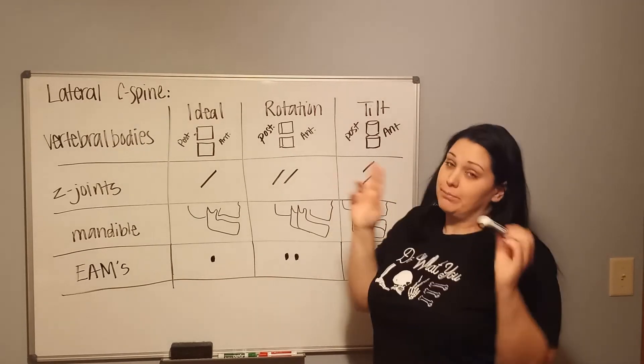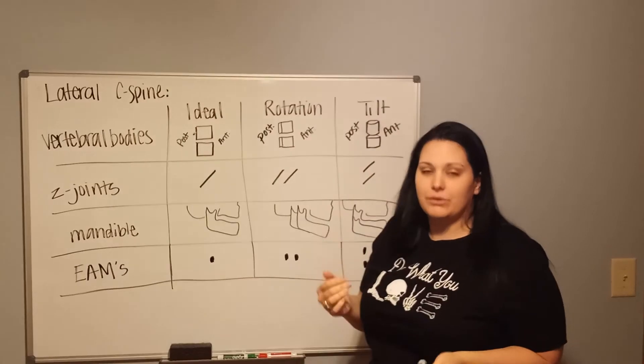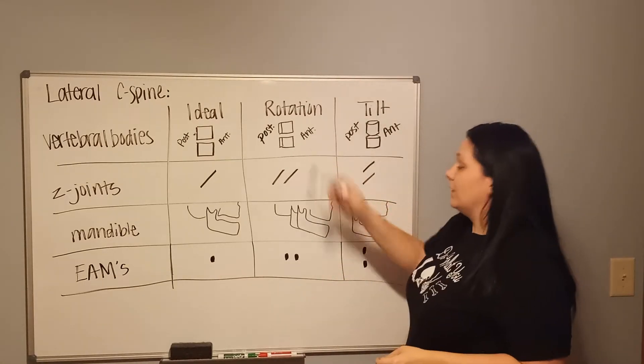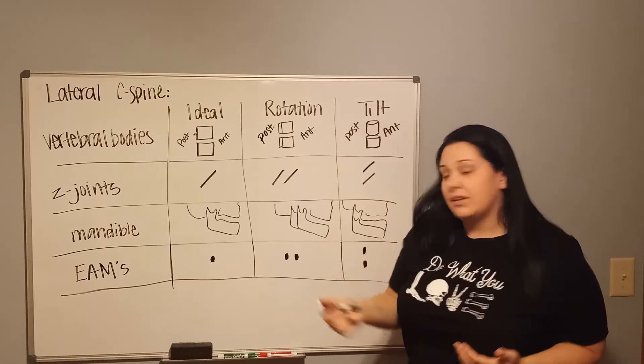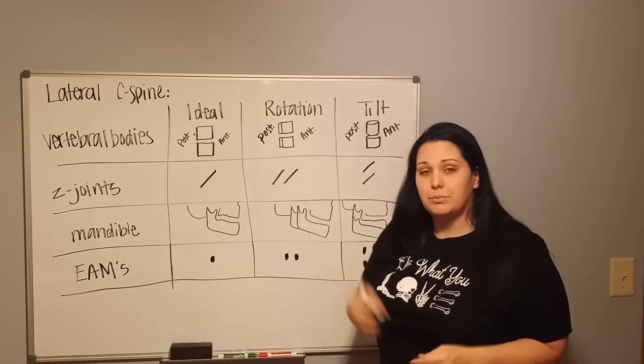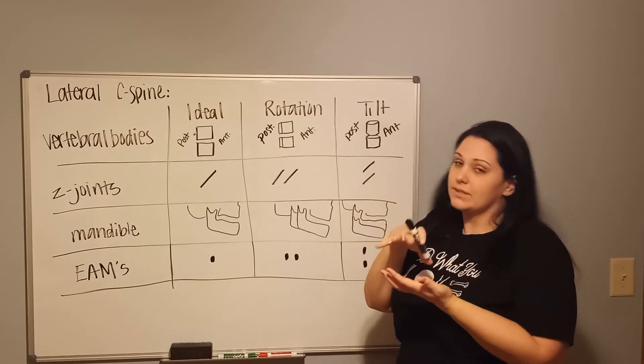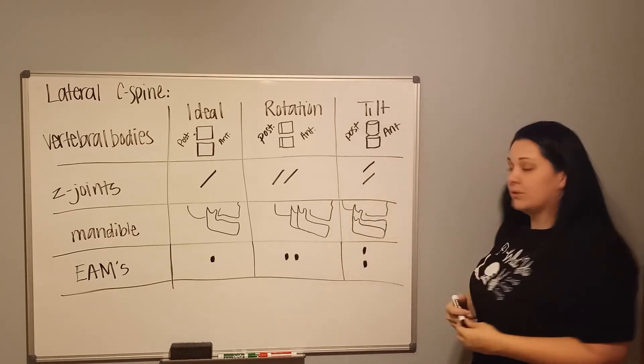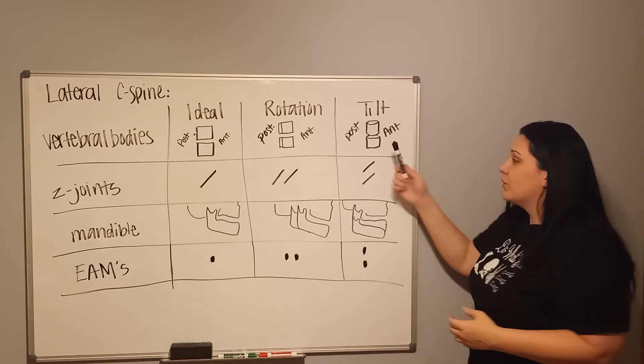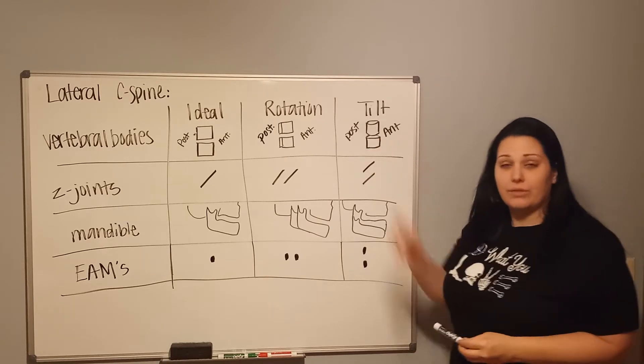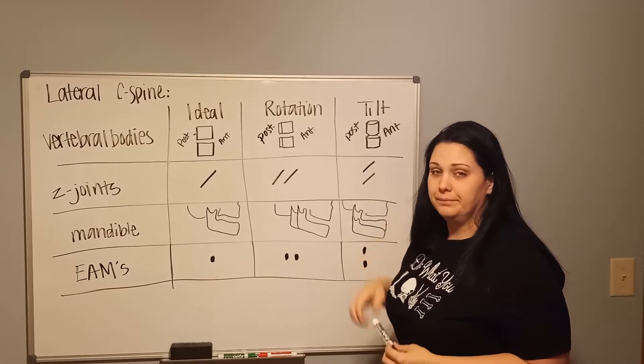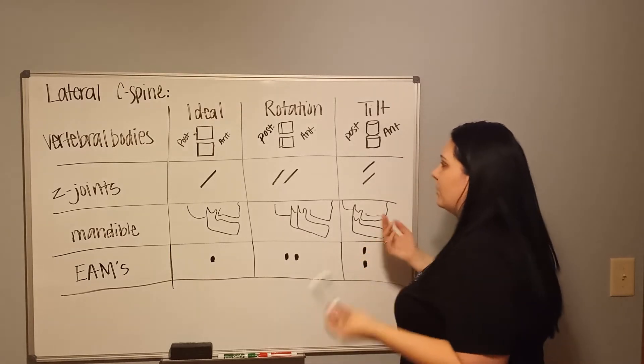Ice cubes are your rotational errors for the vertebral bodies with anterior-posterior displacement. Tilt is going to show up like marshmallows, going to have that superior-inferior displacement. Also, with rotation you aren't necessarily going to have your joint spaces closed because it's not causing that flexion side to side. Tilt, however, does, so you can also tell because of that intervertebral disc space showing closed.